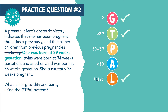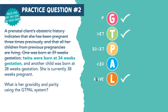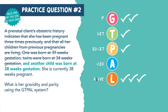Now let's look at her second pregnancy. Twins were born at 34 weeks gestation. We know she was pregnant again — another tally next to G. 34 weeks is considered preterm, so we put a tally next to P. Remember that twins count individually towards L, so we put two tallies next to L for two living children. Now her third pregnancy: another child was born at 38 weeks gestation. She was pregnant again — another tally next to G. 38 weeks is considered term — another tally next to T. And she has another living child — a tally next to L.